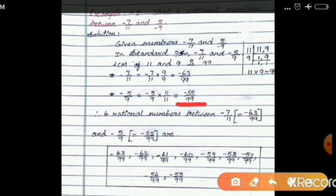Now the denominators are both 99. Looking at the numerators: one is minus 63 and the other is minus 55. We need rational numbers in between minus 63 and minus 55 — that is, minus 62, minus 61, minus 60, minus 59, minus 58, minus 57, minus 56. These are the rational numbers in between minus 7 by 11 and minus 5 by 9.